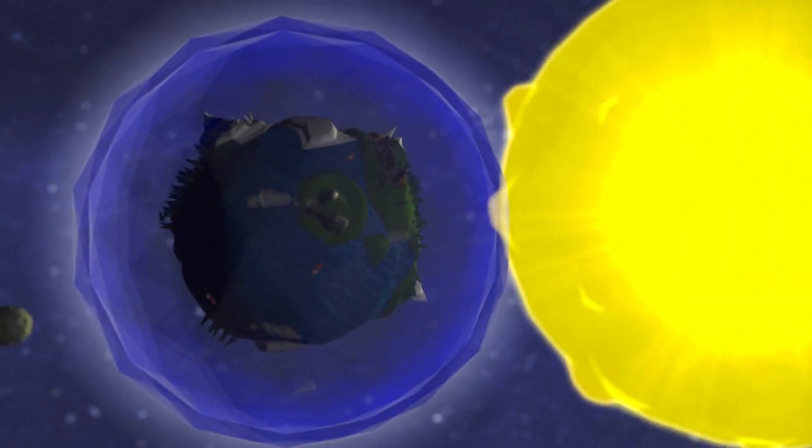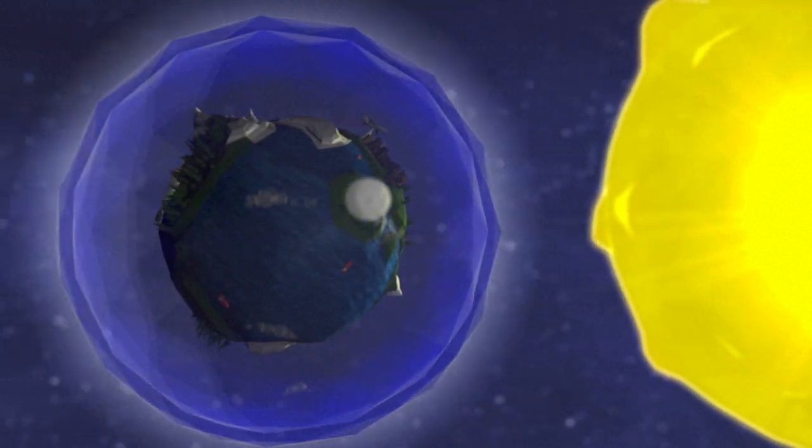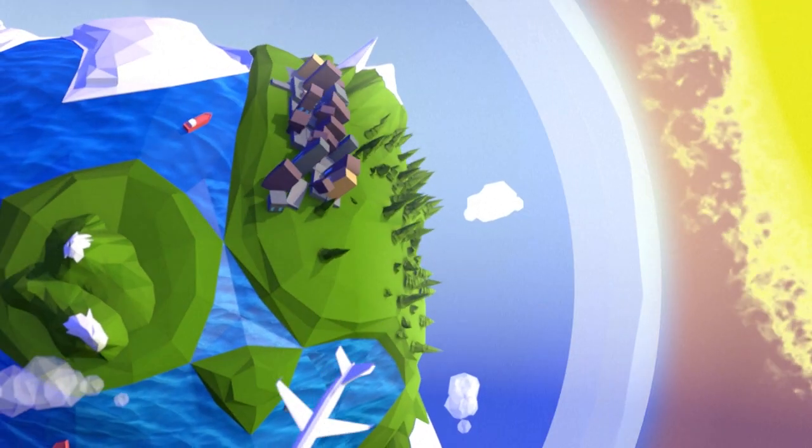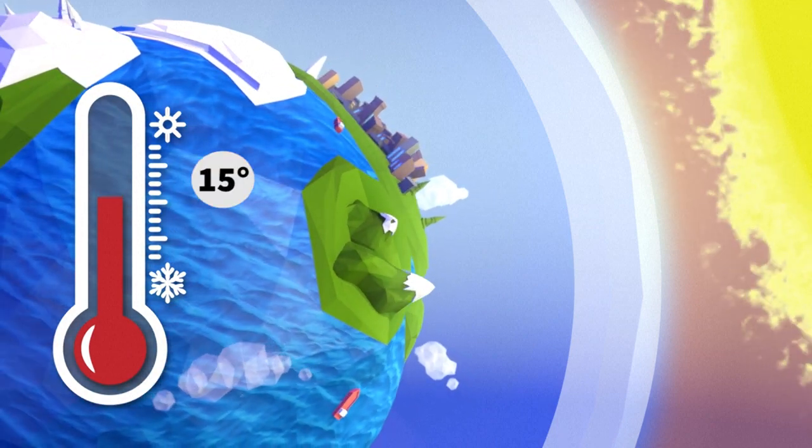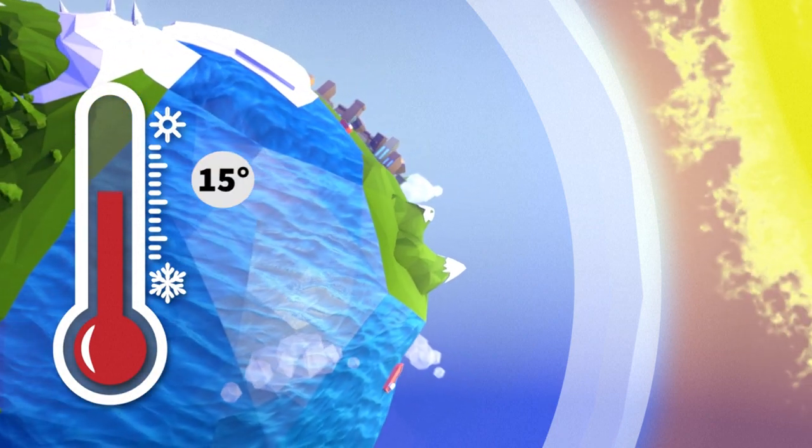The greenhouse effect is a natural phenomenon essential to life on Earth. A little like the glass in a glass house, it maintains the average temperature of the planet at 15 degrees Celsius instead of minus 18 degrees Celsius.